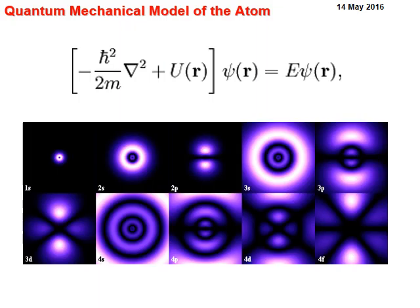You couldn't actually tell where the electron was, but you had a probability of about 99.9% it would be in a certain shell. This led to the current orbital model theory of the atom, which we still use today, also known as the quantum mechanic model or the electron cloud model. The electrons are like a diffuse cloud of negative charge around the positive nucleus.